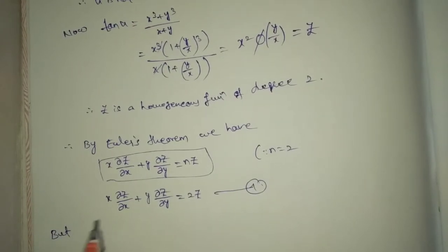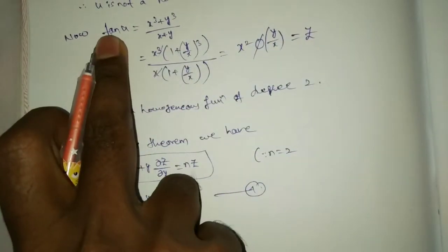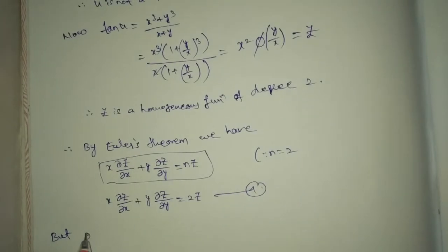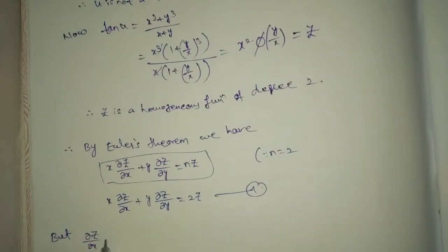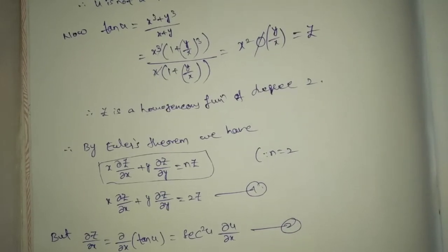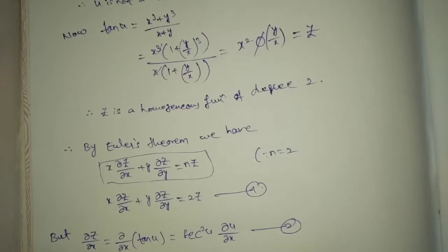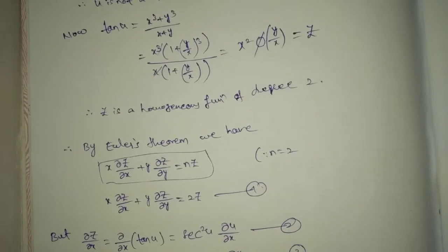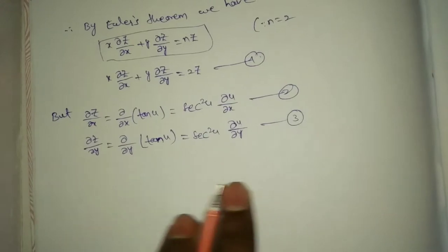But what is z equal? z equal tan u. Del z by del x equal del by del x into tan u, secant square u del u by del x. This is equation number 2. Del z by del y equal del by del y into tan u, that equals secant square u del u by del y. Equation number 3.